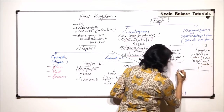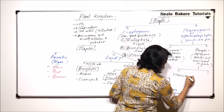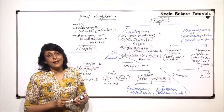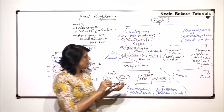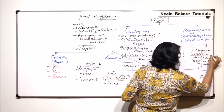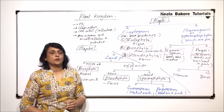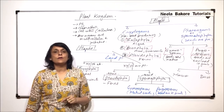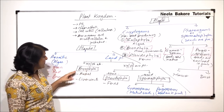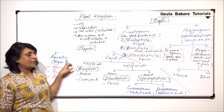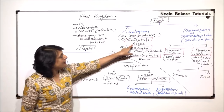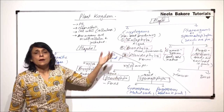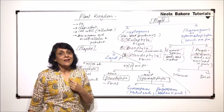Angiosperms are further divided into monocot and dicot on the basis of the number of cotyledons. Now if we compare these two classifications, we have pretty much the same thing — only the characteristics used to classify them are different. In the first classification, aquatic plants included algae, and in the second classification, algae are placed in Thallophyta, because the body is thallus-like and not differentiated into root, stem, and leaf.